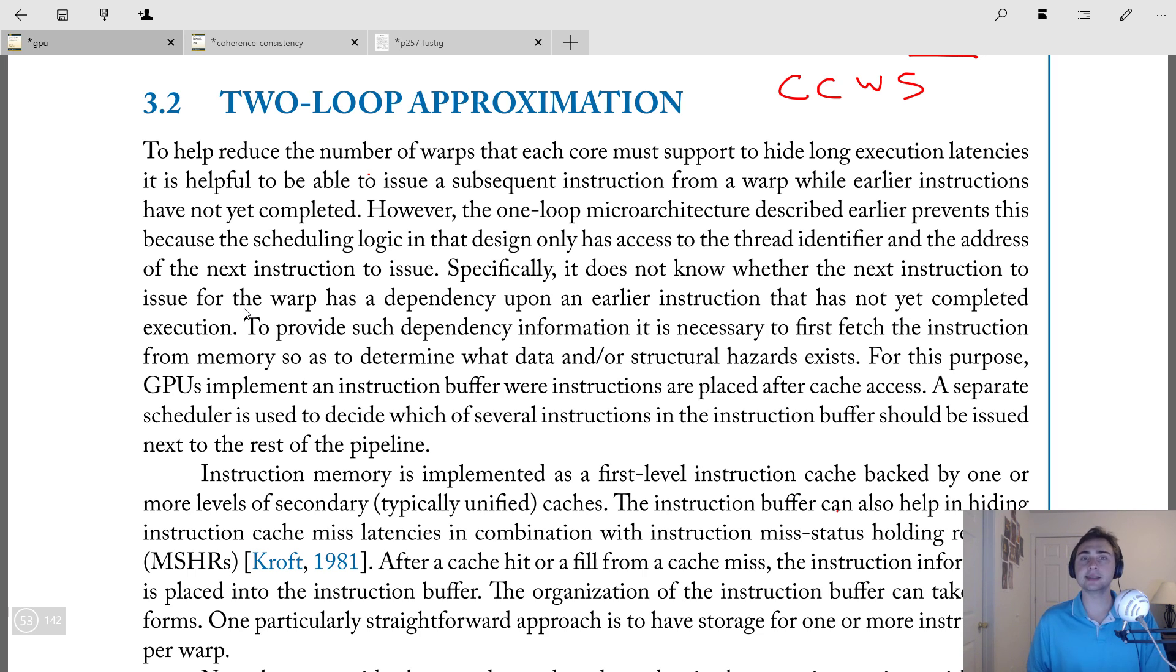If we want to hide the latency of a warp that has a long latency instruction, we just have multiple warps that we select between and we pick another warp to issue from. The other thing we covered was this idea of what happens if not all lanes within a warp will be executing that same instruction. And so in order to handle that, we talked about the SIMT stack and stack-based architectures for reconvergence, and we also talked about stackless architectures.